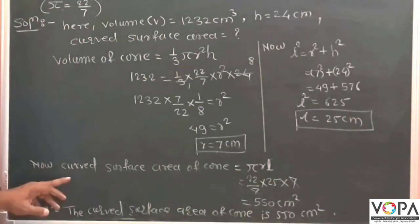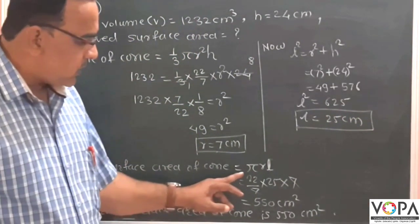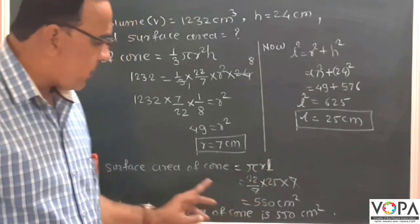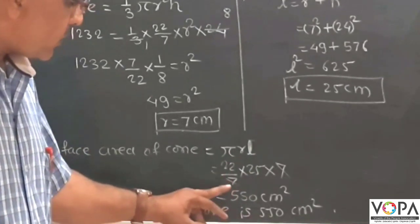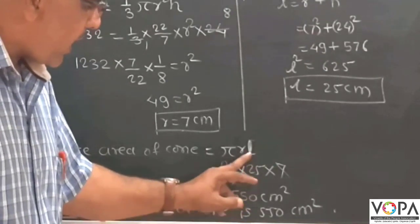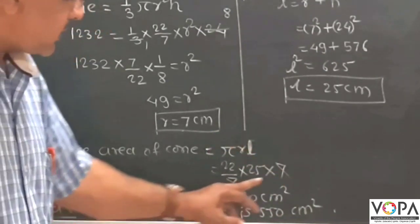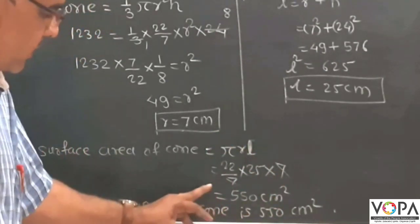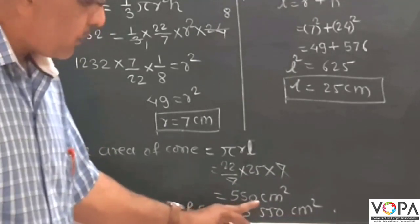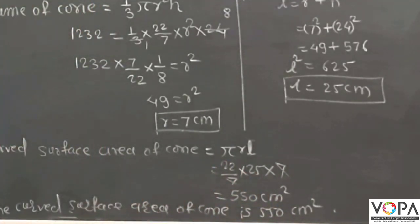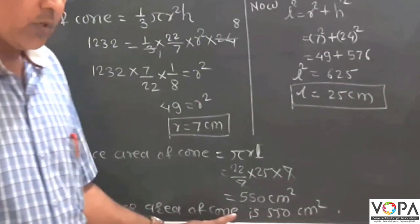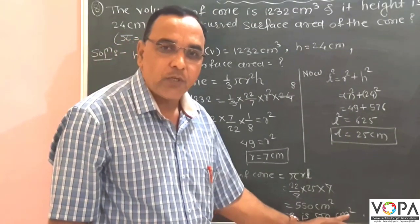Now curved surface area of cone is equal to pi r l. Put value pi 22 upon 7 into r, l is 25, r is 7. Now 7 and 7 is cancelled. By solving this step, it is 550 cm². The answer is, the curved surface area of the cone is 550 cm².